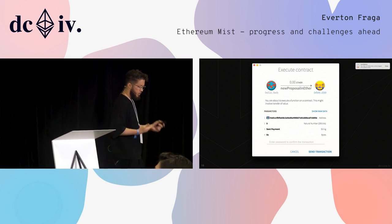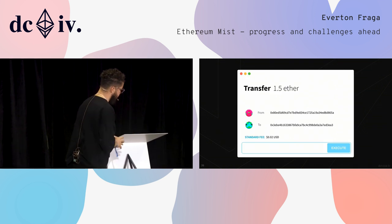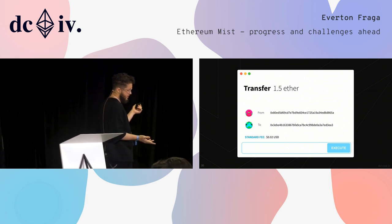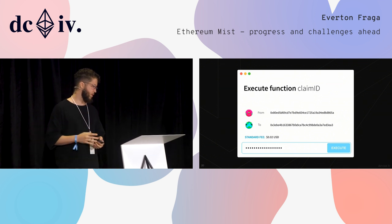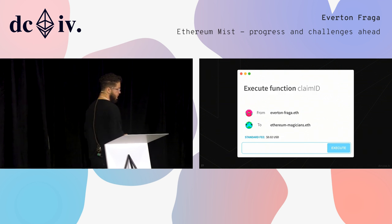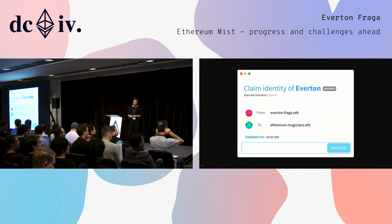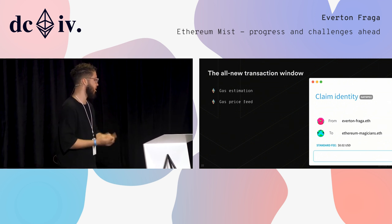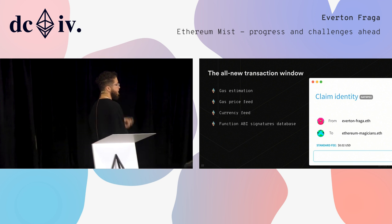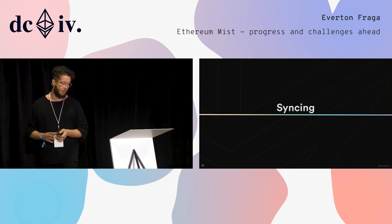We were pretty happy with the old design at the time, but now we are changing this to something more clear and straightforward. You can transfer tokens, execute functions. The user types the password and executes the transaction. We can have a kind of description thanks to NatSpec, and thanks to ENS we can have more descriptive information about addresses. This is our new transaction window — we gather and mix lots of information together: gas estimation, price feed, currency feed, functional ABI signatures, NatSpec, and ENS address lookup.